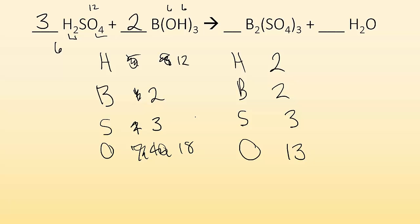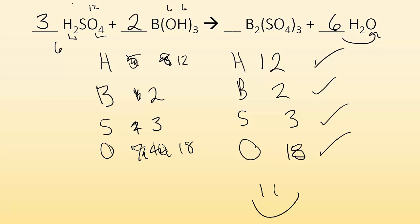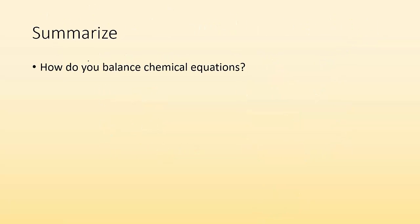Now balance hydrogens — put a six in front of H2O so I have 12 hydrogens on the product side. I also changed oxygens — five more, so total oxygens are now 18. Everything is balanced. Last step: can I reduce? I've got three, two, one, and six — no, I can't reduce that. I'm done. So, to summarize: that's how you balance chemical equations. Develop that skill. Have questions? Bring them to class and ask me. See you then. Okay, bye.